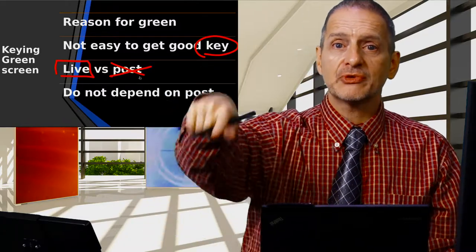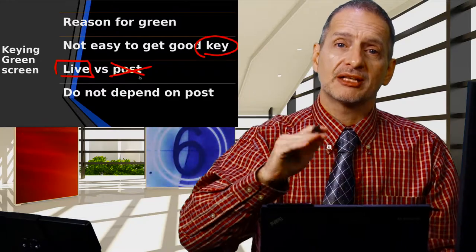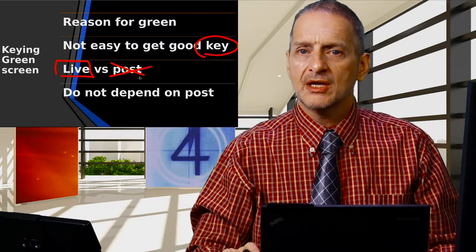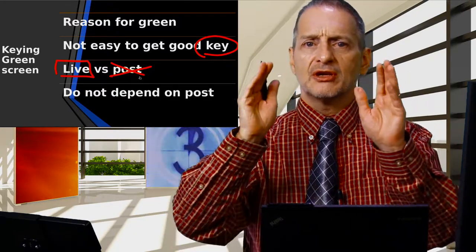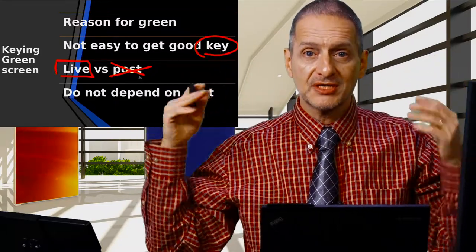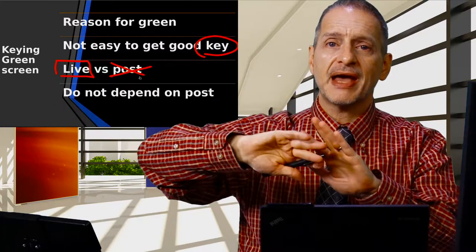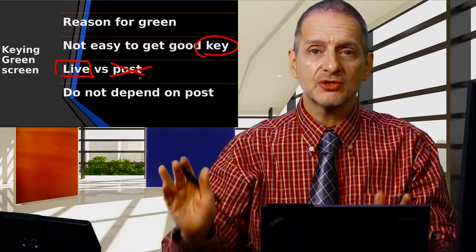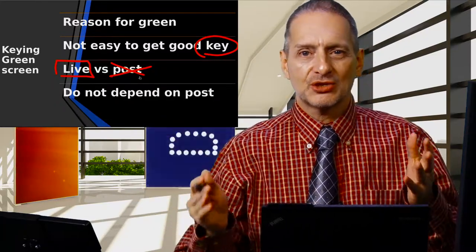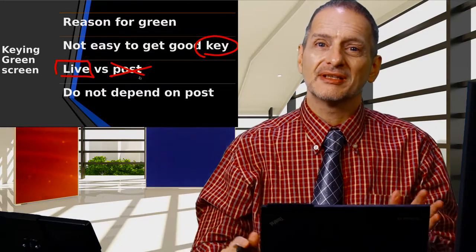Then I send the recording to the hard disk, and I can edit later, but I don't need to change the green screen. Now another way you could do this is you could record me and the green screen first, and then later in your software put in the background. Yes, you can do that, but you've got to make sure that it turns out good — and how do you know until you do it?